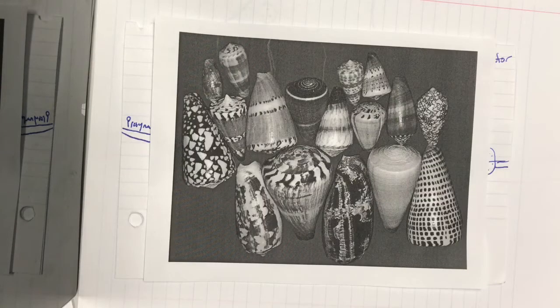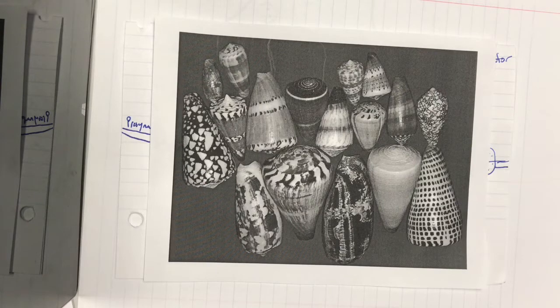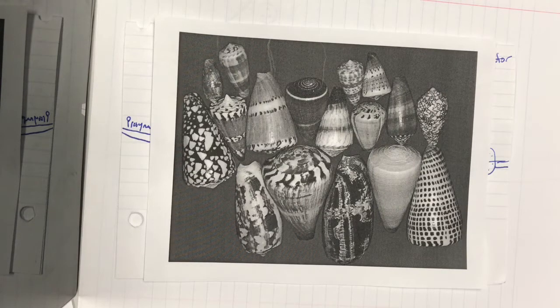Cone snails as a whole have around 80,000 different conotoxins. We're going to focus particularly on a conotoxin called TX7, which rose from genetic mutations in the cone snail's DNA and it allowed for a unique structure.